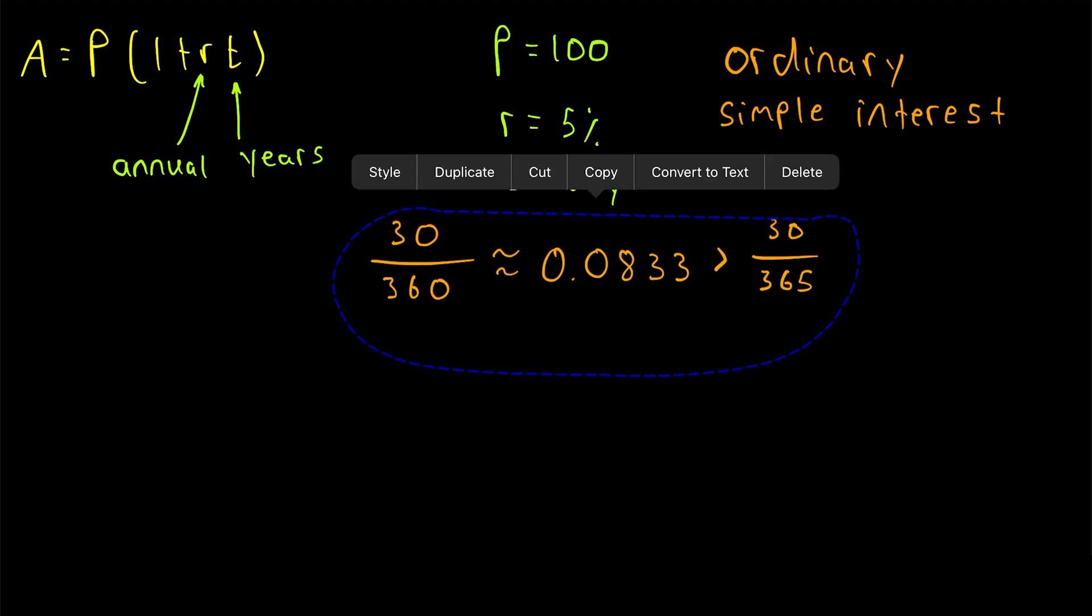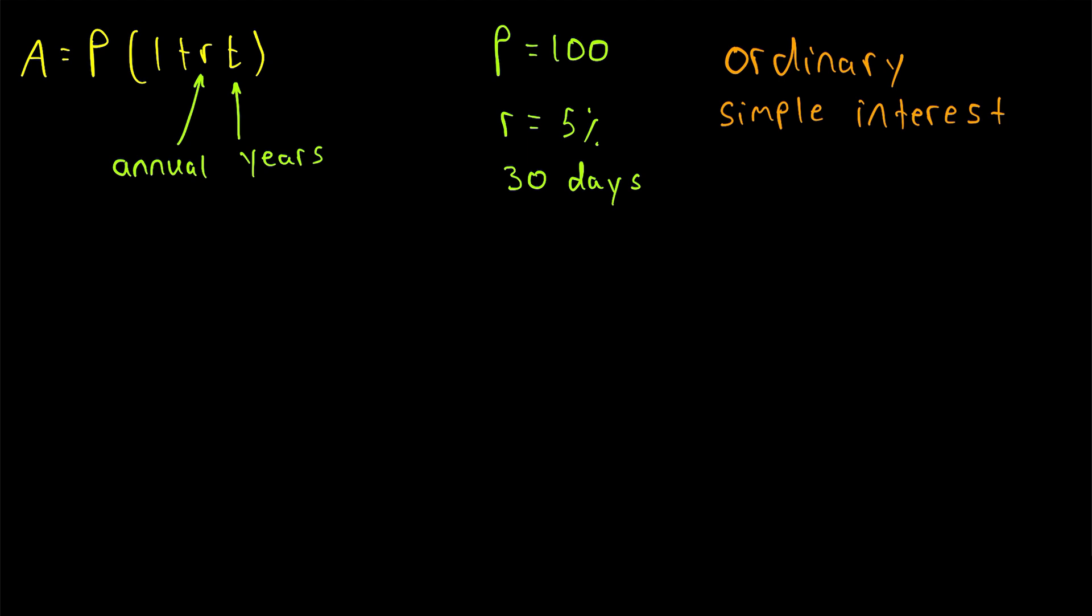So if we just want to go ahead and finish this example real quick, the total amount in our account earning 5% ordinary simple interest, after 30 days, the amount in our account will be 100, the principal invested, multiplied by 1 plus the interest rate, 5%, or 0.05, multiplied by the amount of time that has passed. We want to measure this in years using ordinary simple interest, so we take the number of days that have passed, 30, and divide by 360. And this is approximately 100.42.